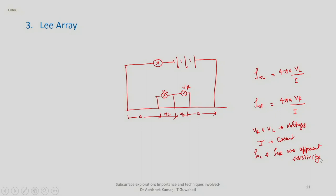Generally, the first two - Schlumberger array and Wenner array - are more commonly used when going for field investigation. In the Wenner array all four electrodes are moved every time, and in the Schlumberger array only the outer current electrodes are moved while the inner potential electrodes stay fixed, with current electrodes moved in the range of four to five times the inner electrode spacing.